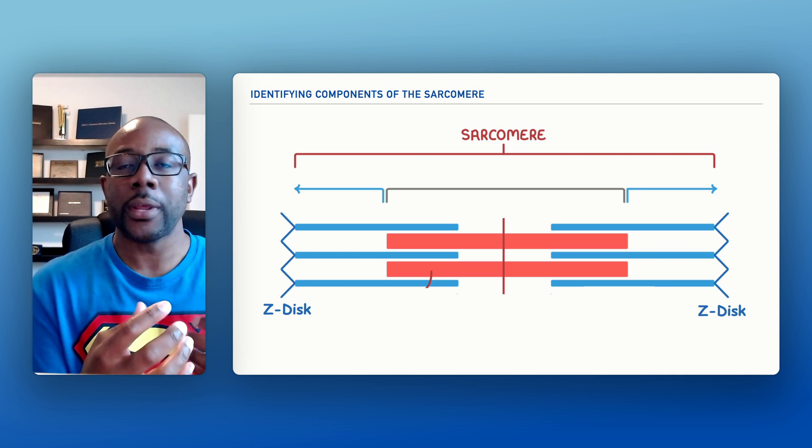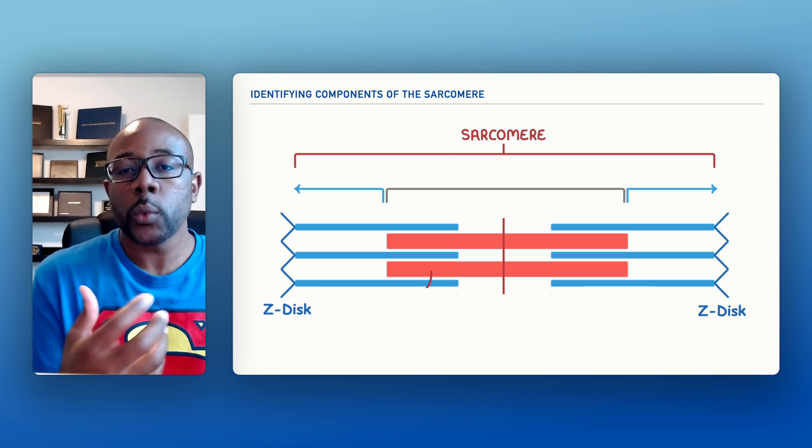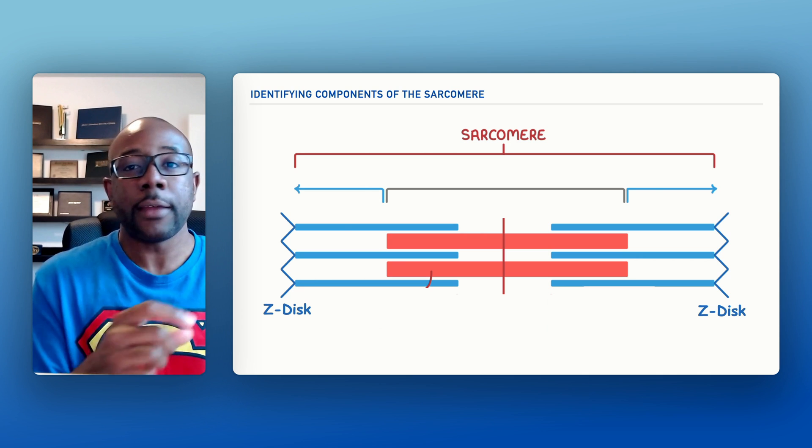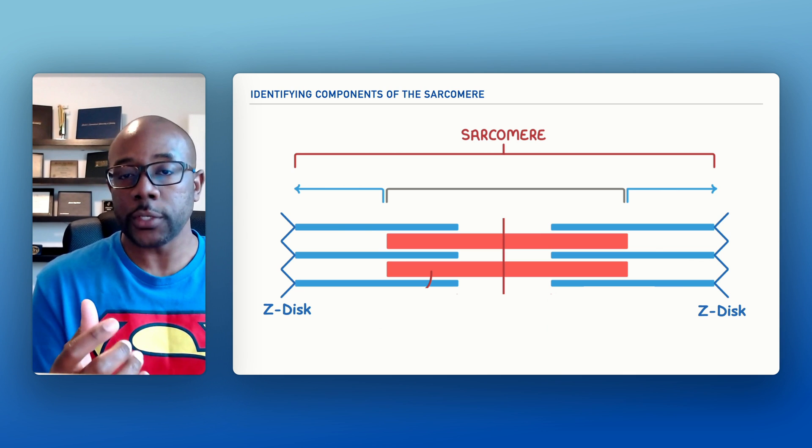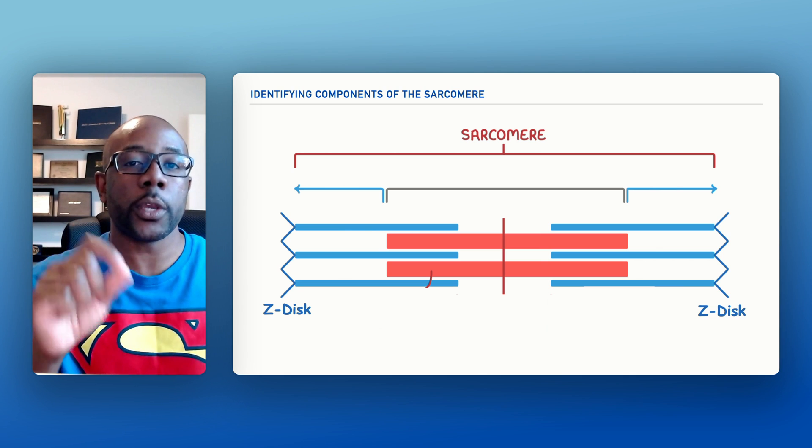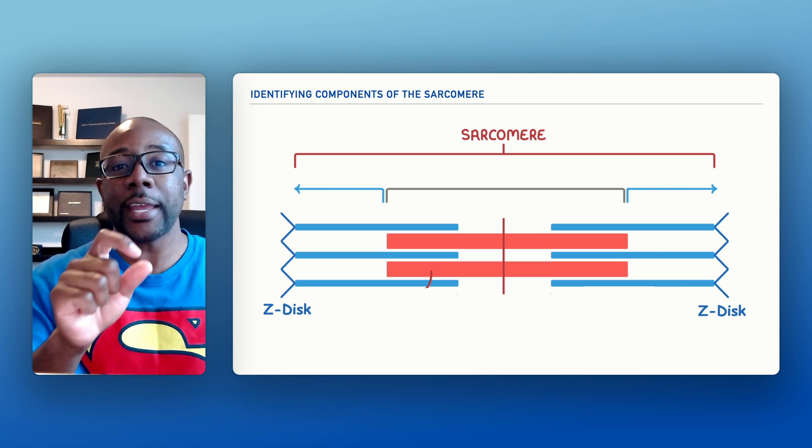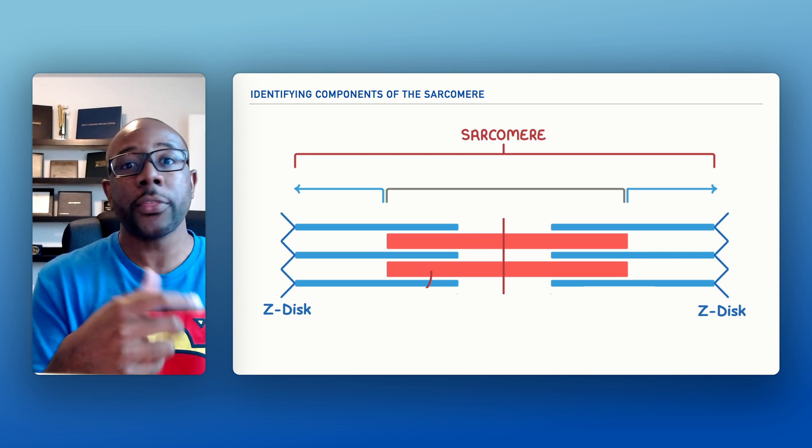Now when we use the word actin filament, what we're referring to is the fact that filament means protein and actin is a specific type of protein, and sometimes we'll hear it referred to as a thin filament or a thin protein.